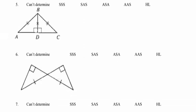In number five, the right angles in the picture lead me to think maybe this is going to be hypotenuse-leg — but be careful because right angles don't always mean hypotenuse-leg. Looking at this picture, AB is the hypotenuse of the triangle on the left, BC is the hypotenuse of the triangle on the right, and BD is indeed a pair of congruent legs. These triangles are congruent by hypotenuse-leg.